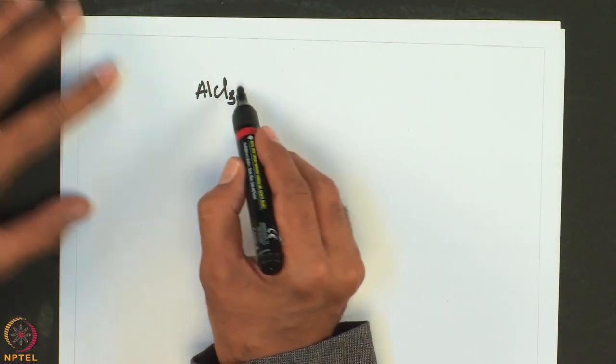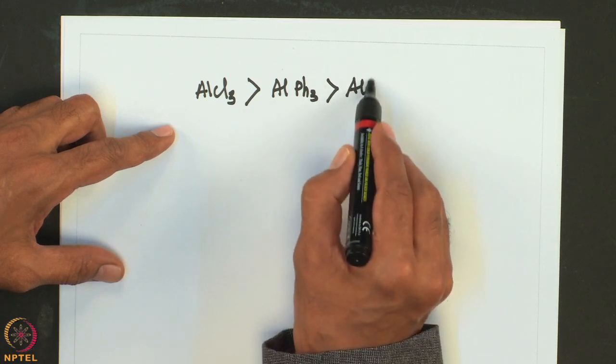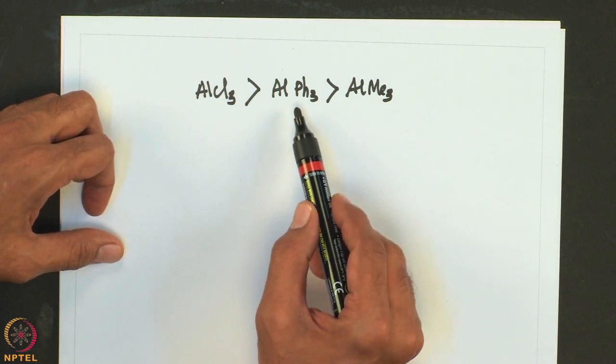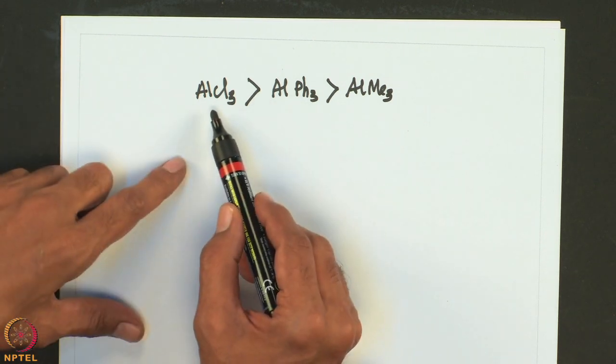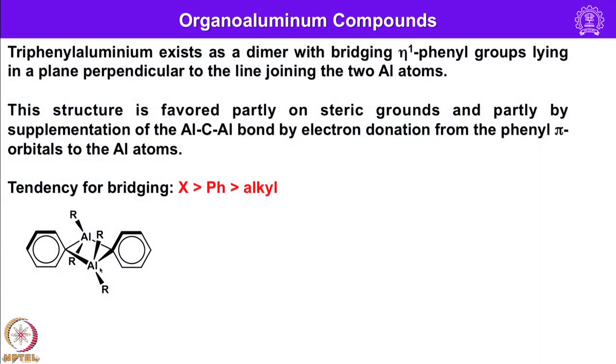AlCl3 has more tendency for bridging because chlorine has a lone pair. In AlPh3 the pi electron cloud can be utilized to strengthen the bridging unit or three-center two-electron bond. For AlMe3, it is no longer just a three-center two-electron bond — chlorine readily donates a pair of electrons to the empty sp3 orbital on aluminum. If the two aluminums are in a plane, the phenyl group is perpendicular, making the overlap of the pi cloud with the empty sp3 orbital of aluminum more efficient.